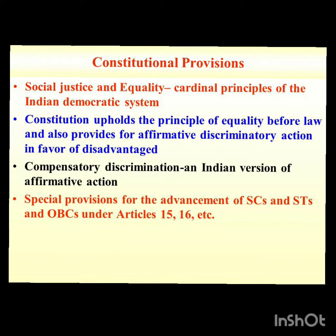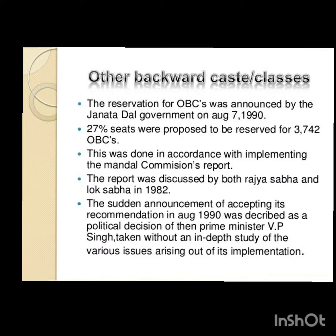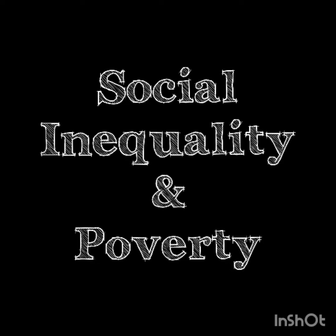Titles denoting privileges, like Nawab and Raja, have been abolished. People can only attach academic and military titles to their names. People have the right to reside in any part of the country; however, this right has some restrictions to protect the interests of tribal groups. The National Commission for Scheduled Castes and Scheduled Tribes was constituted to protect the interests of the marginalized groups. Reservations for SCs, STs, and OBCs have been created in central, state, and local legislative bodies.